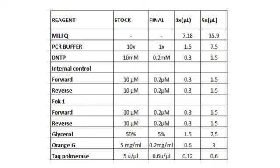First of all, we need to prepare a master mix to amplify the DNA. The master mix is a mixture of components needed to amplify the DNA. We are going to process 4 samples, so we have to prepare 6 reactions: 4 reactions for the 4 samples, 1 reaction for a Negative Template Control (NTC), and 1 extra reaction. Always prepare 1 extra reaction because pipetting errors may occur.